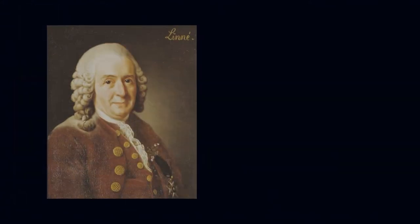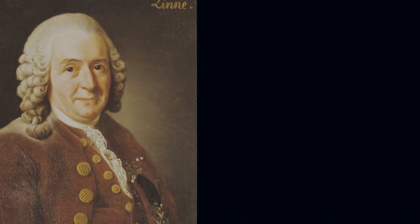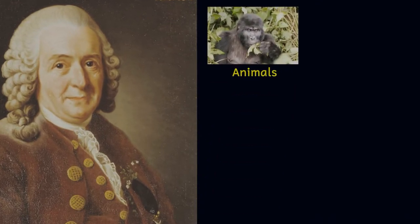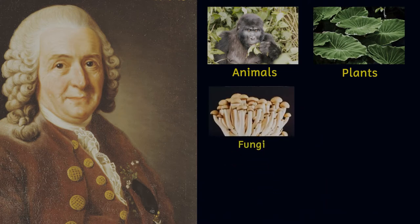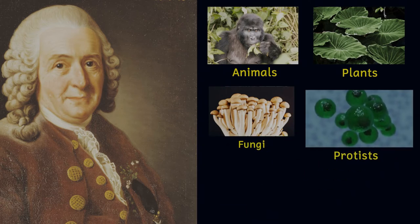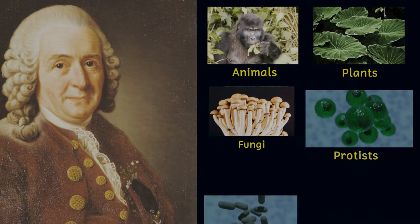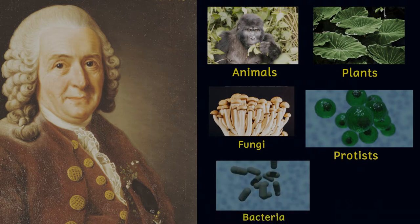When Carl Linnaeus was devising his system of classification, he only recognized two kingdoms: animals and plants, or vegetabilia as he called them. Over time we have modified and expanded these groupings as we have learned about and discovered more and more organisms. Modern classification systems largely use genetic similarities to classify organisms.